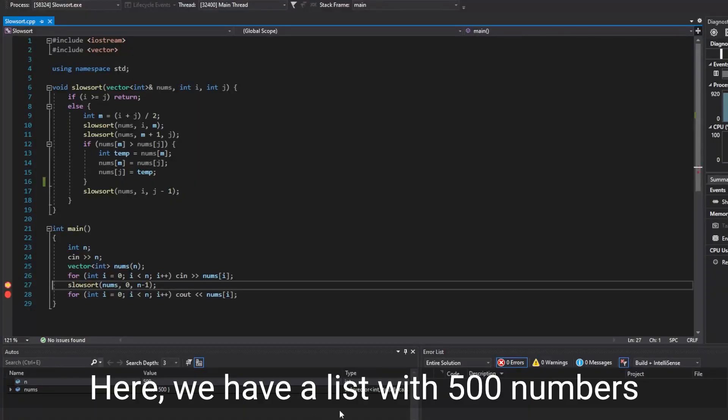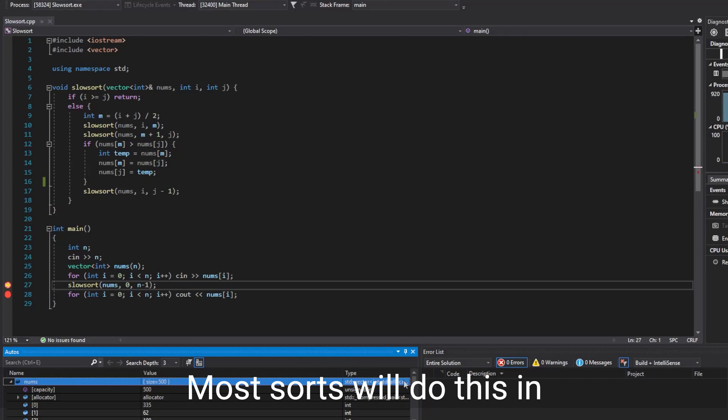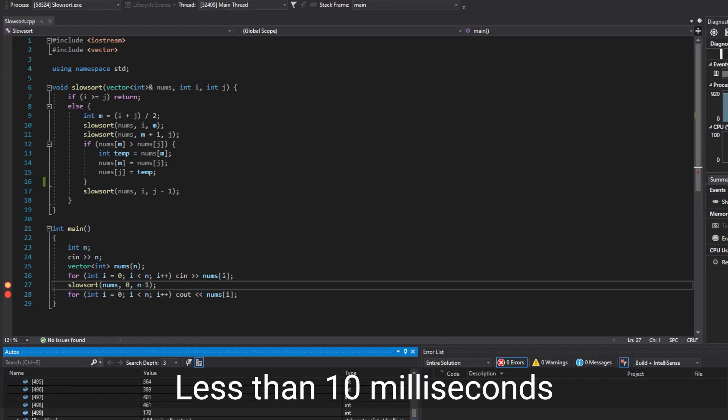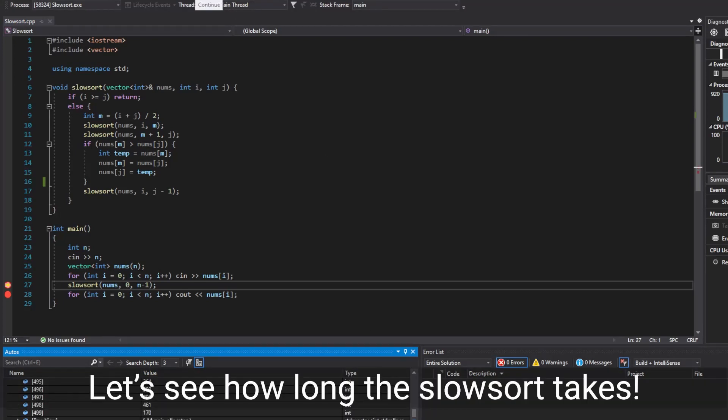Here, we have a list with 500 numbers. Most sorts will do this in a negligible amount of time, less than 10 milliseconds. Let's see how long the slow sort takes.